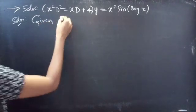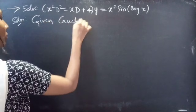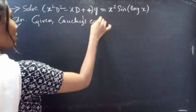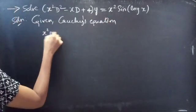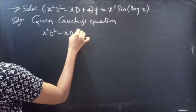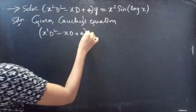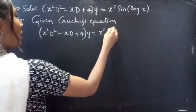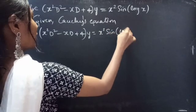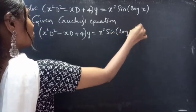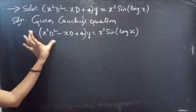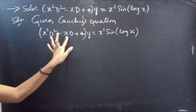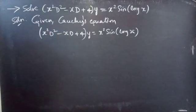We are given Cauchy's equation: x squared D squared minus x D plus 4, all times y, equals x squared sine of log x. We are going to reduce this differential equation having variable coefficients to a differential equation with constant coefficients.